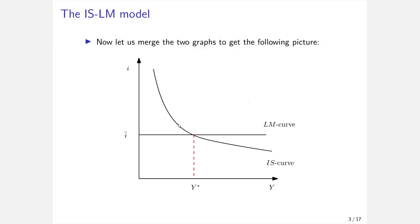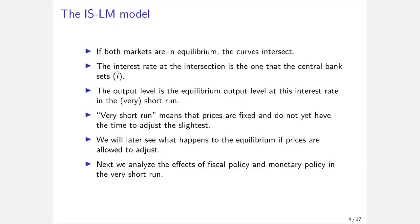That intersection is the very short-run equilibrium of the macroeconomy, where the interest rate is I-bar and the income/output level is Y*. In other words, where both curves intersect, both sub-markets — the goods market and the financial market — are in equilibrium, with the interest rate at the level the central bank sets, I-bar, and output at Y*.